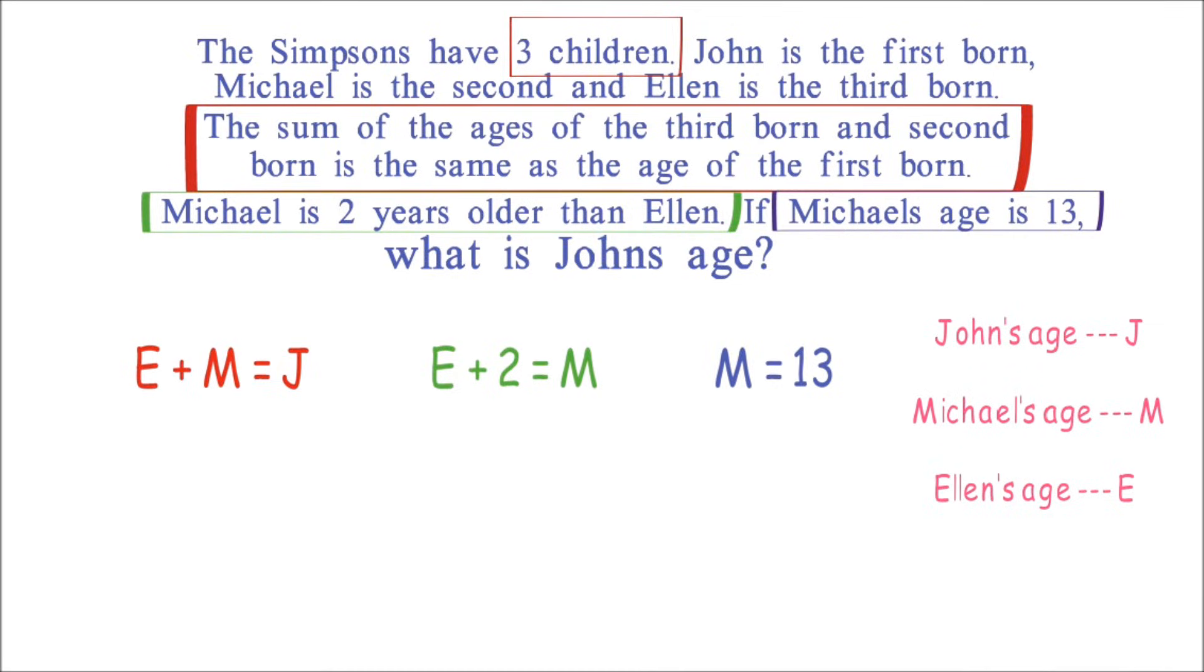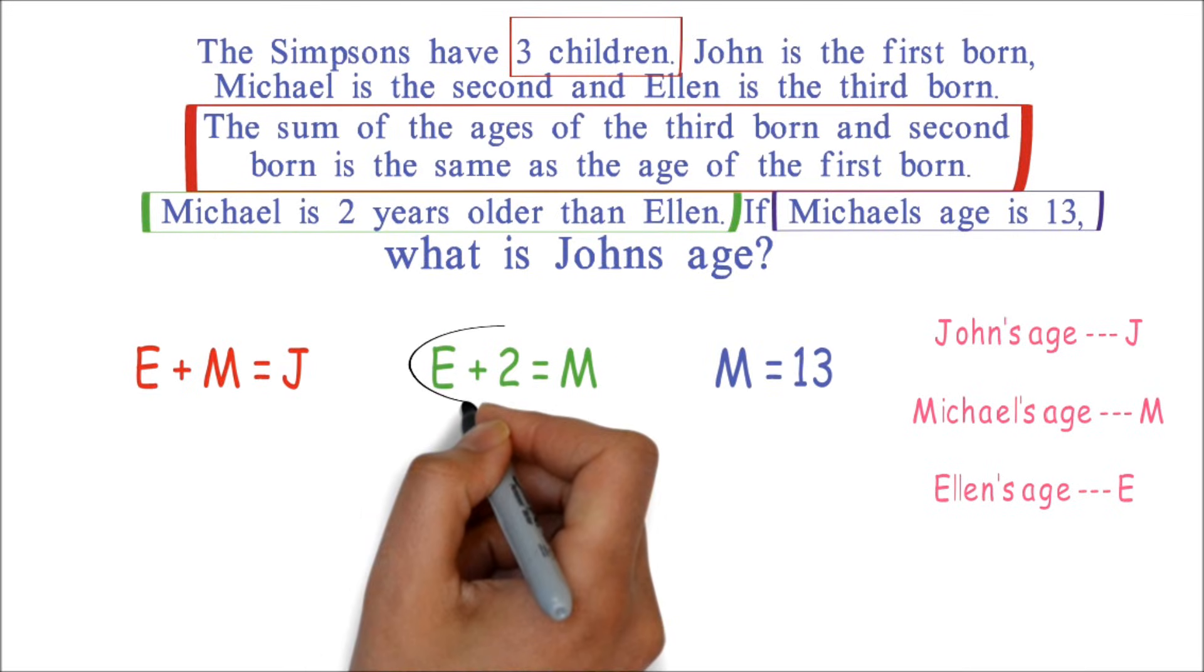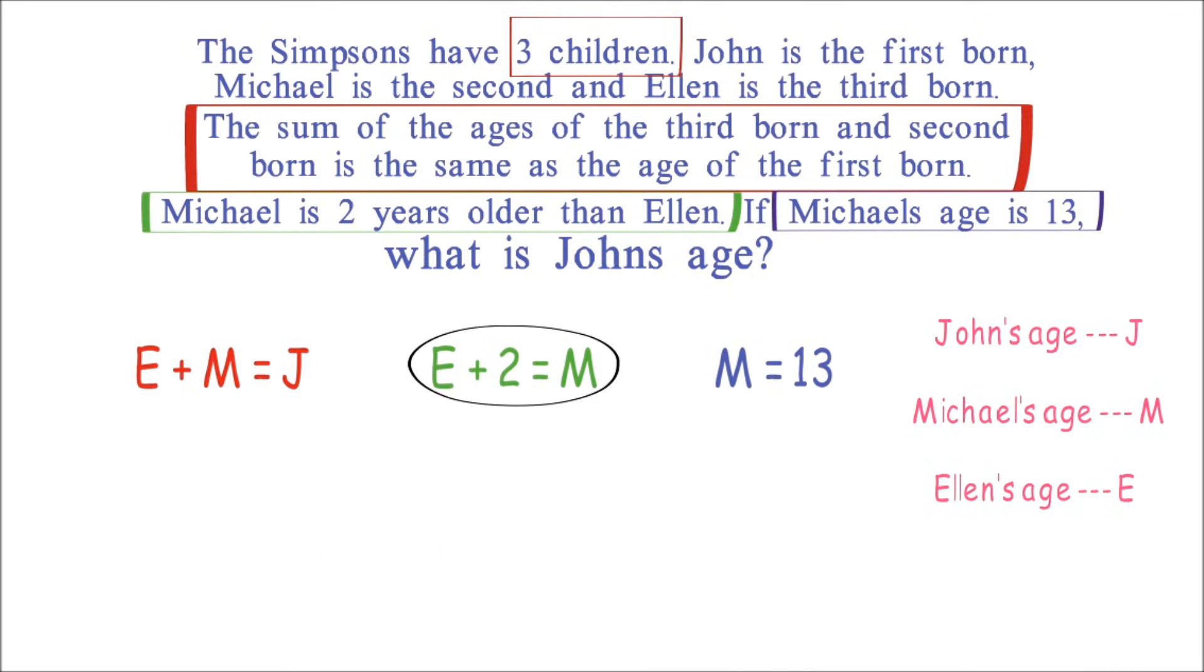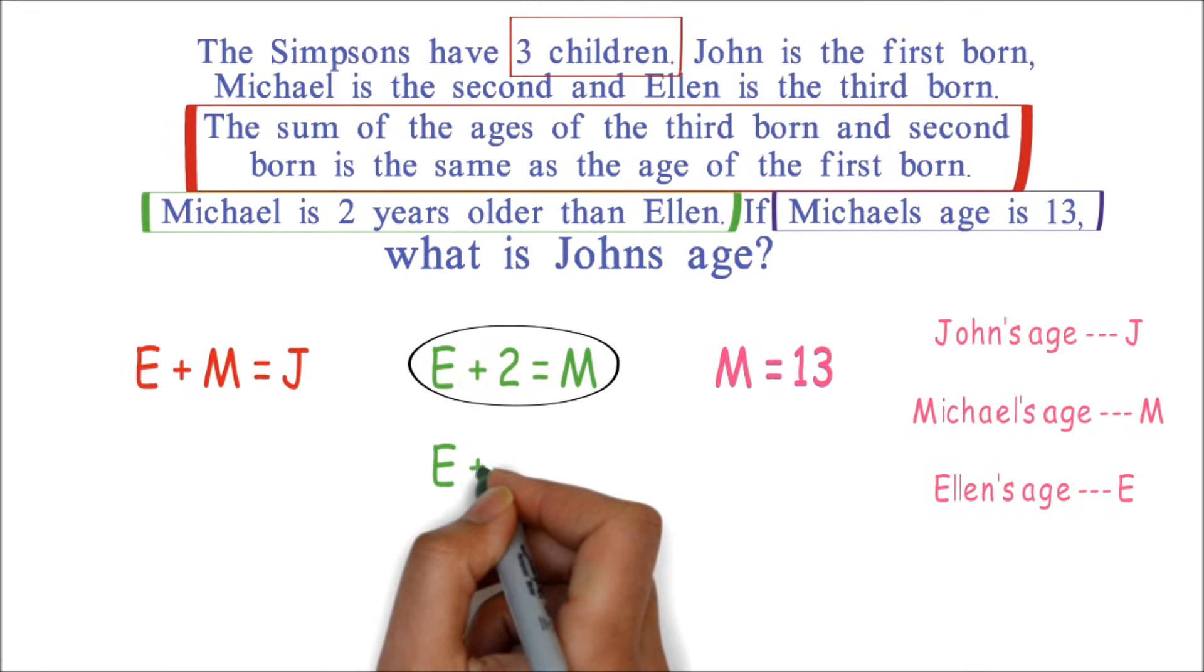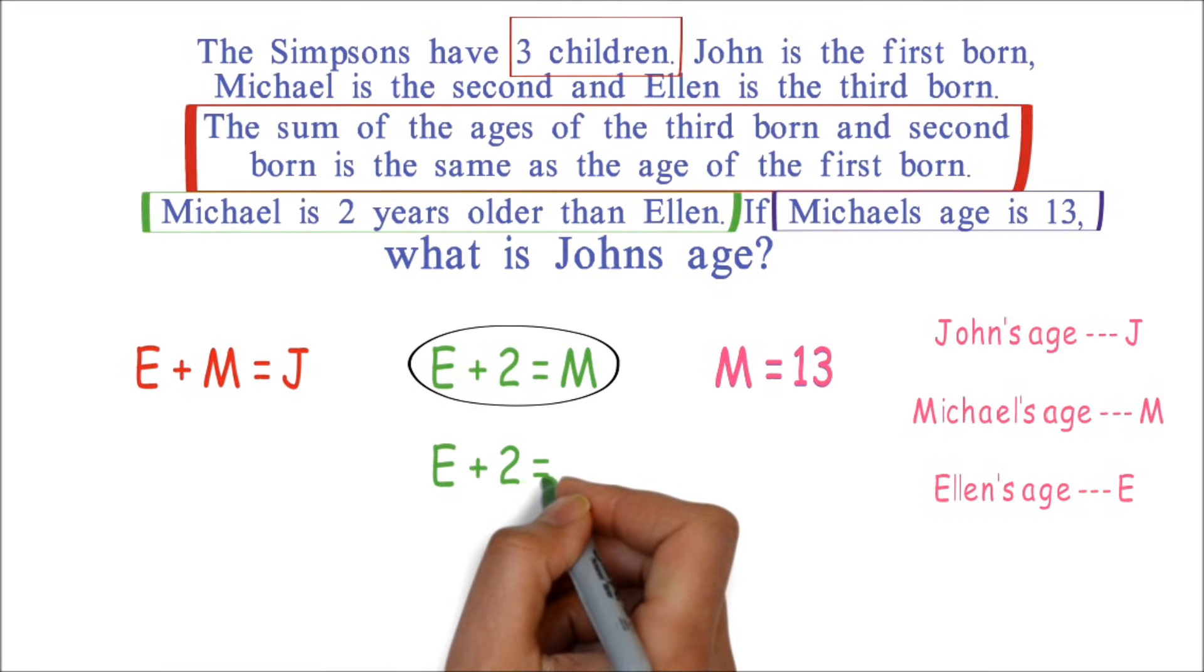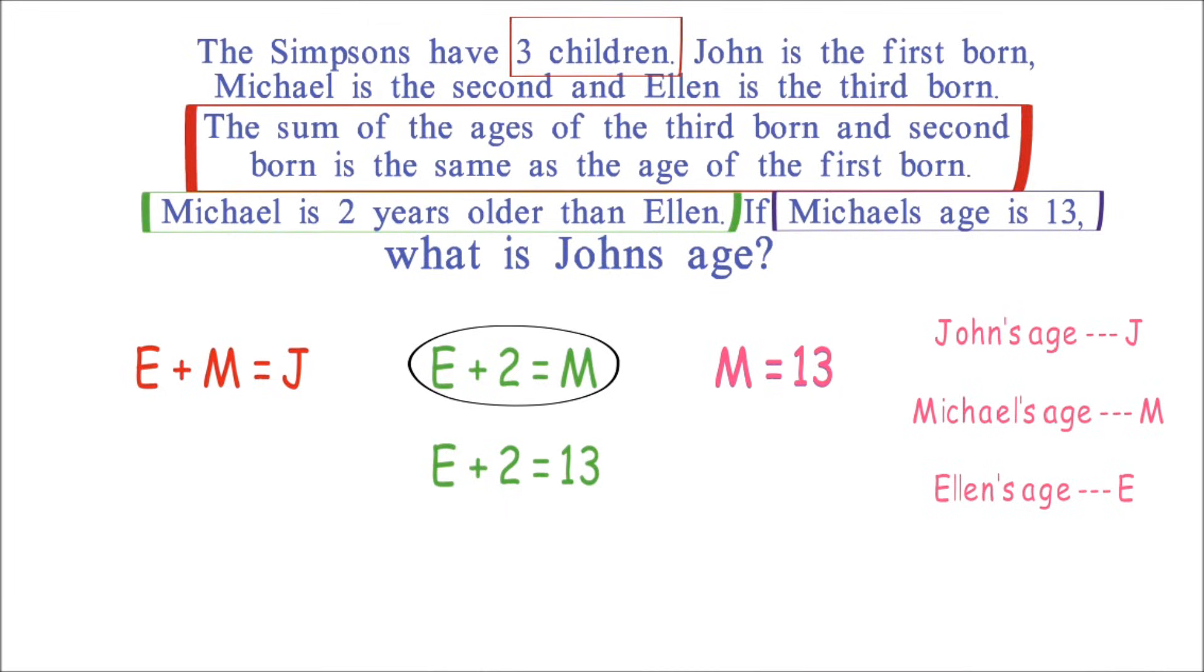Since we know Michael's age now, we can solve for Ellen's age from this equation. E plus 2 equals M. Now M is 13, so we have E plus 2 equals 13. We solve for E and get E equals 11.